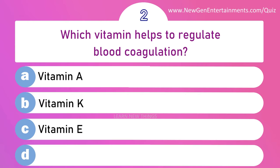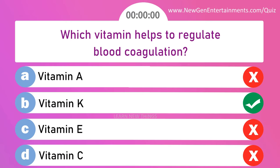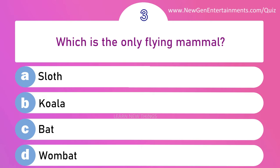Which vitamin helps to regulate blood coagulation? Options are: A) Vitamin A, B) Vitamin K, C) Vitamin E, and D) Vitamin C. Answer is option B: Vitamin K.